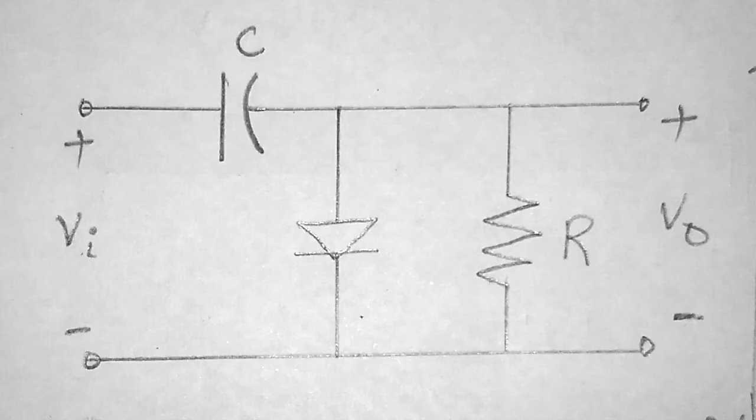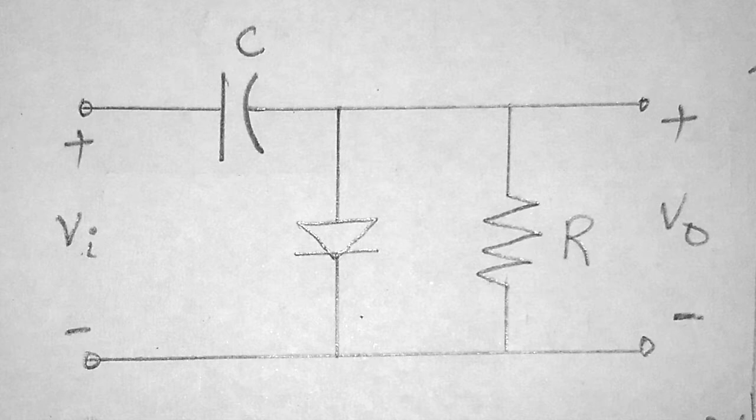Clamping network is an electronic circuit that will clamp a signal to different DC level. It consists of a capacitor, a diode, and resistor element. But it can also employ an independent DC supply to introduce additional shift.